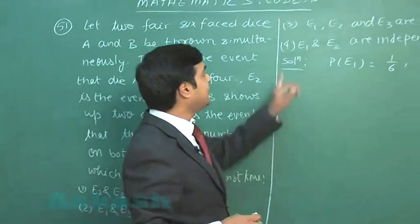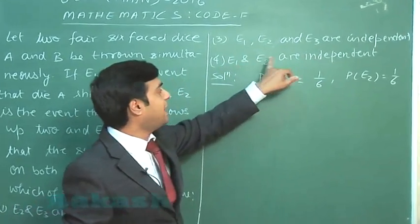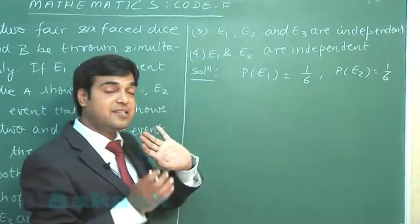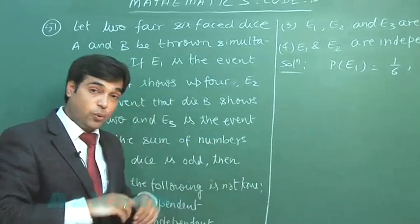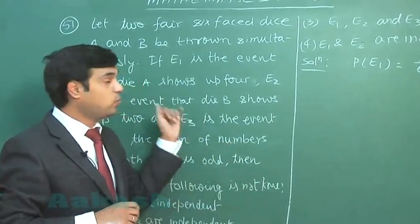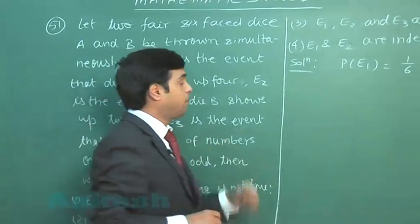First one says E2, E3 are independent. Second says E1, E3 are independent. Third says E1, E2, E3 are independent. Fourth says E1 and E2 are independent. Let us talk about the pair E1 and E2. E1, that is A showing up 4, E2, that is B showing up 2.